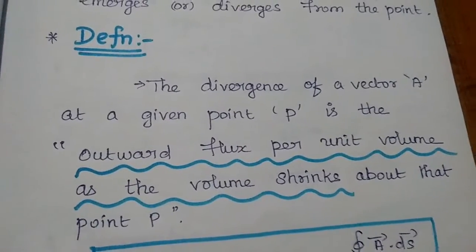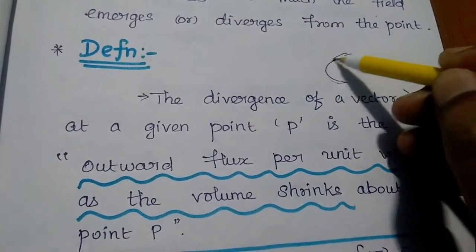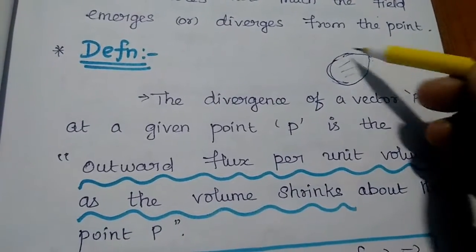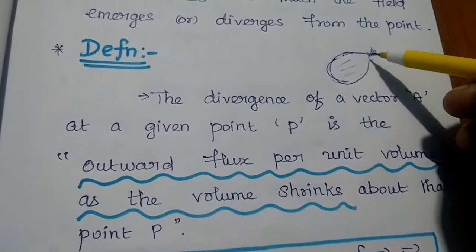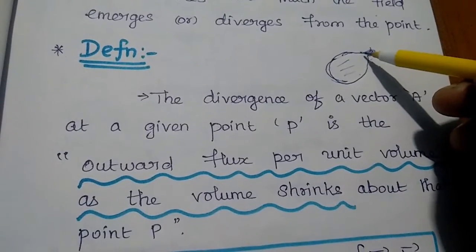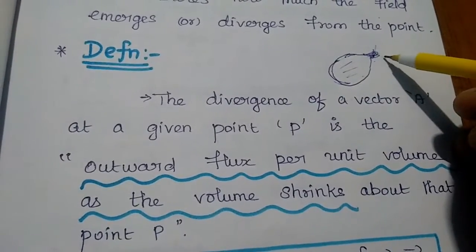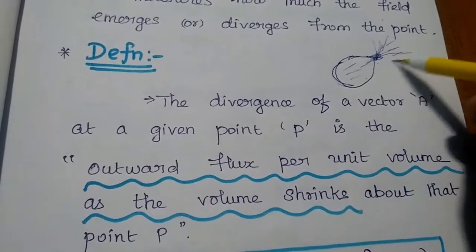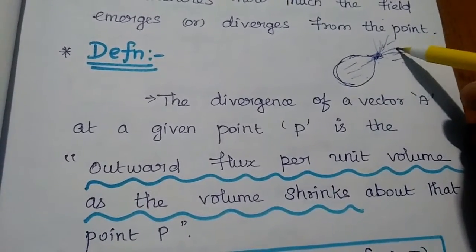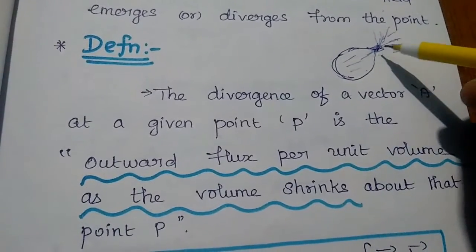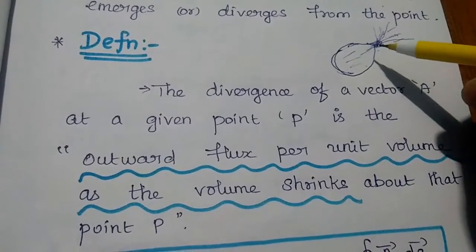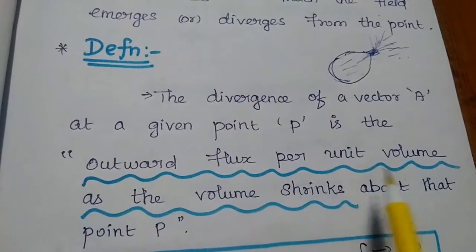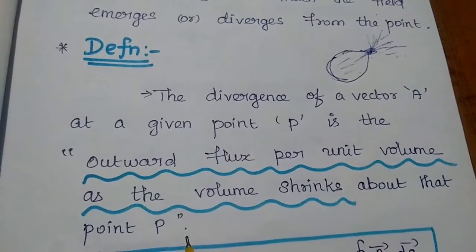We can consider one example — a balloon. There is a balloon which is full of air. The whole balloon is represented as a volume. Now, when I open this balloon, all the air goes out, spreading everywhere. That is outward flux per unit volume as the volume shrinks. While the air is going out, the volume of the balloon starts to shrink. So outward flux per unit volume as the volume shrinks about point P — that is the meaning of divergence.